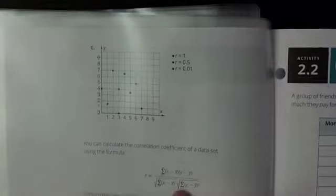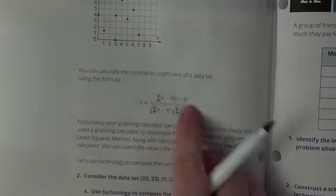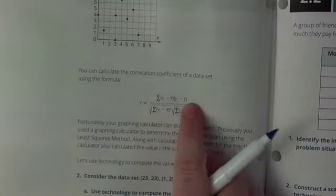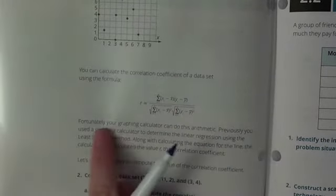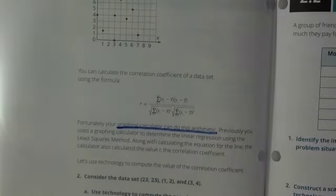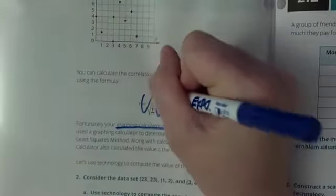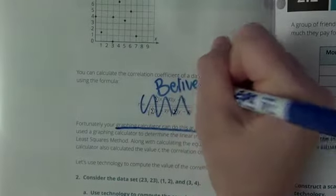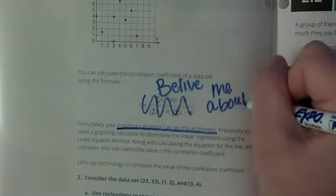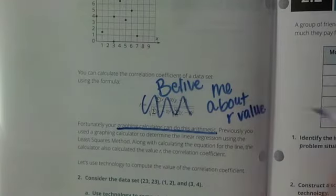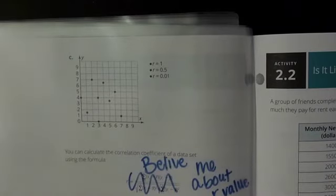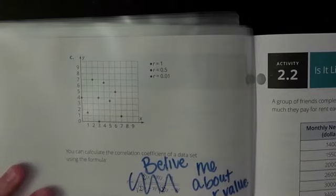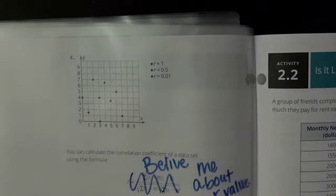Again, remember how I said that you don't want to know how your calculator does stuff? This is like a foreign language to you right now and there's no way that we're going to do it. Notice it says fortunately your graphing calculator can do this. Believe me, you just want to believe me. Believe me about R value. You do not want to know where it comes from. There are times that I try to show you guys and there are times that there is no way I would show you how to do something. That's why we have a graphing calculator.